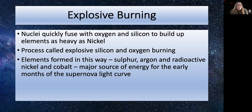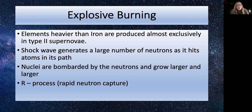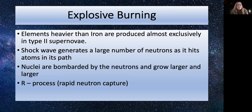Supernovae from massive stars produce most of the elements from oxygen to calcium and about half of the iron, cobalt, and nickel. Elements heavier than iron are produced almost exclusively in Type II supernovae. As the shockwave travels out, it generates a large number of neutrons, and nuclei in these shells are bombarded by neutrons. They can capture these neutrons and grow larger and larger into different, heavier elements — this is called the R process, or rapid neutron capture. We can form many elements this way.